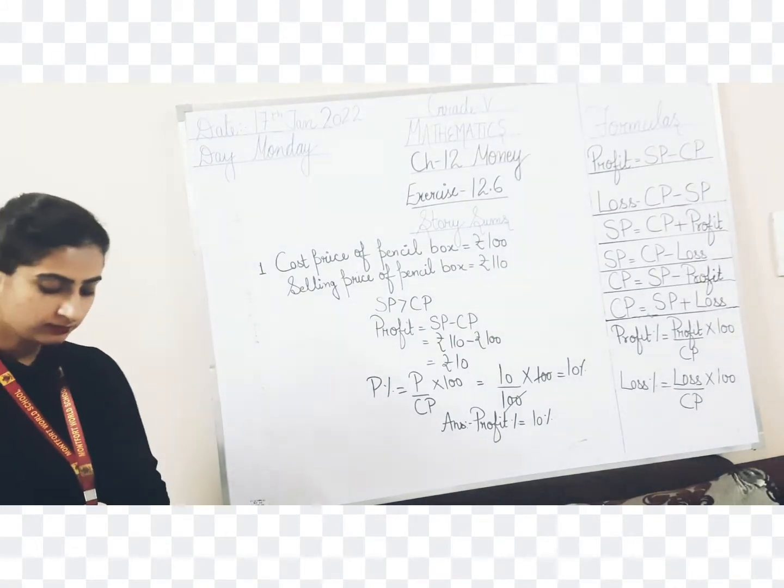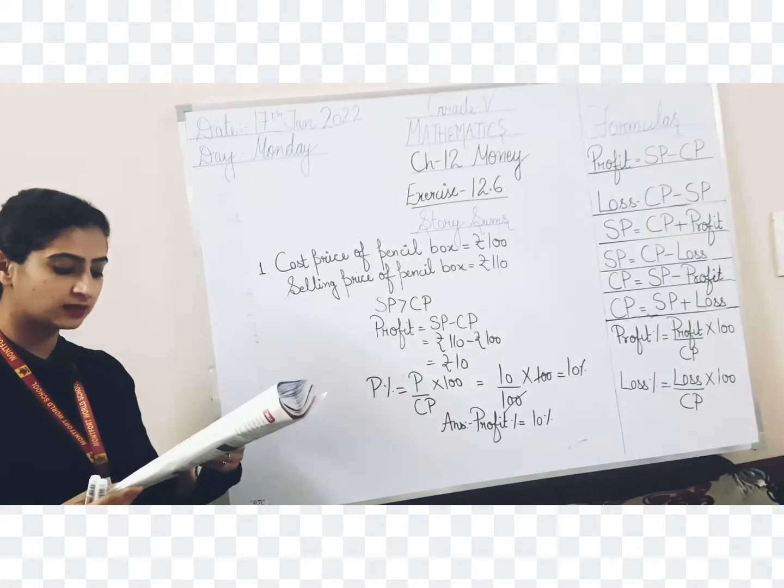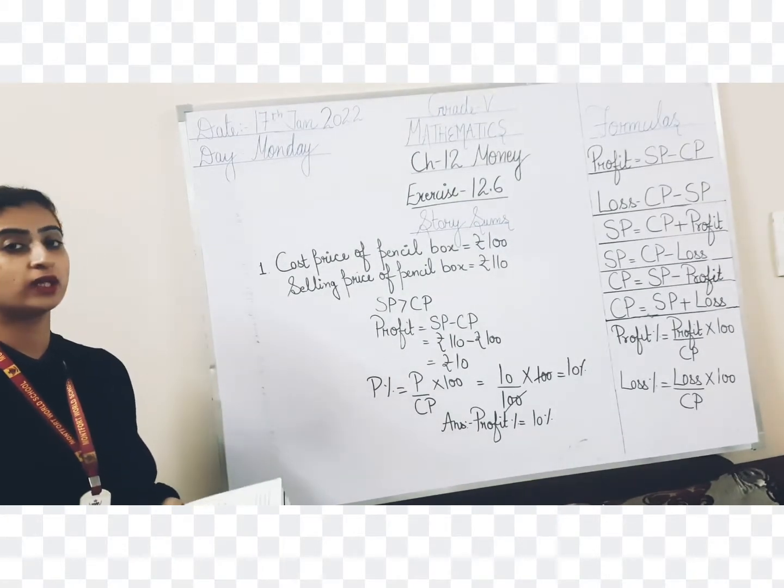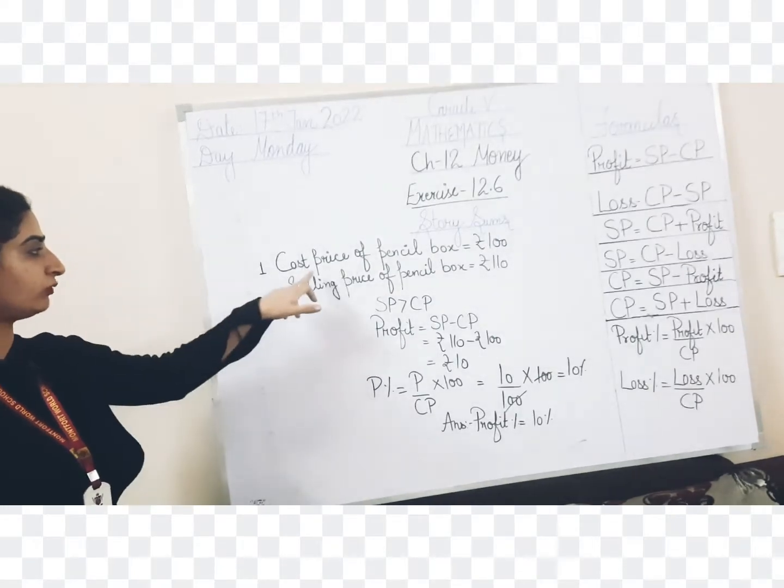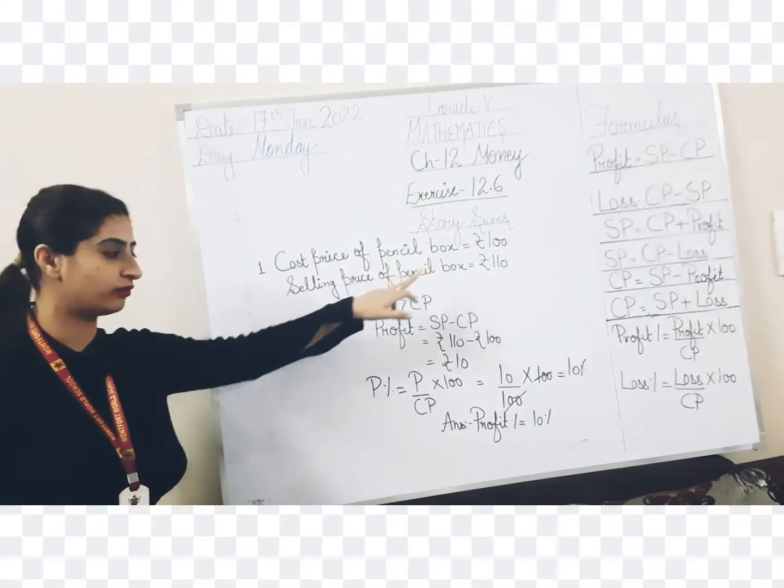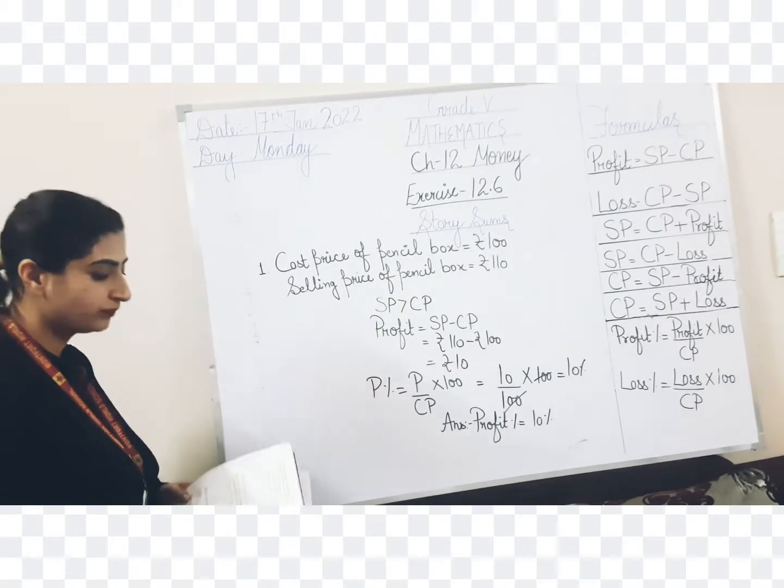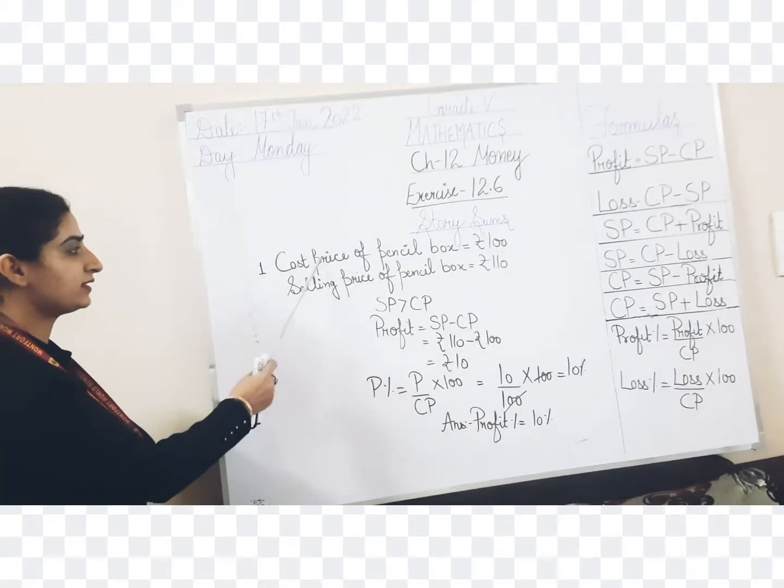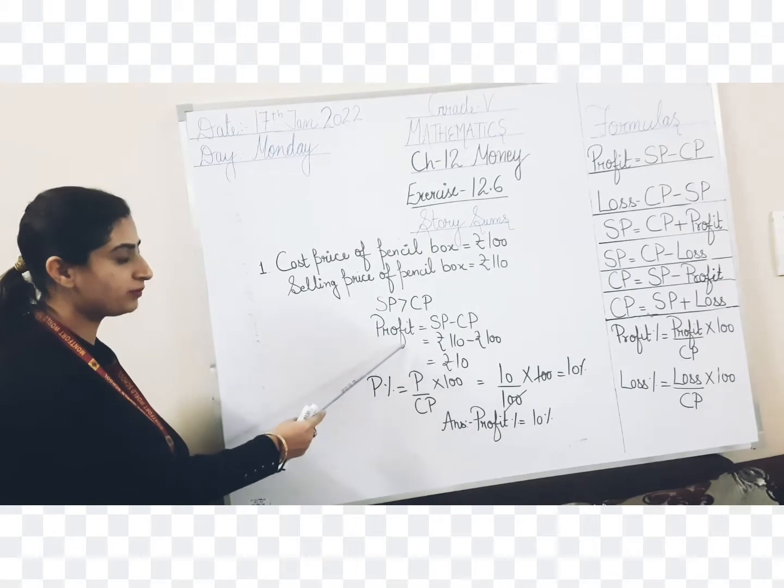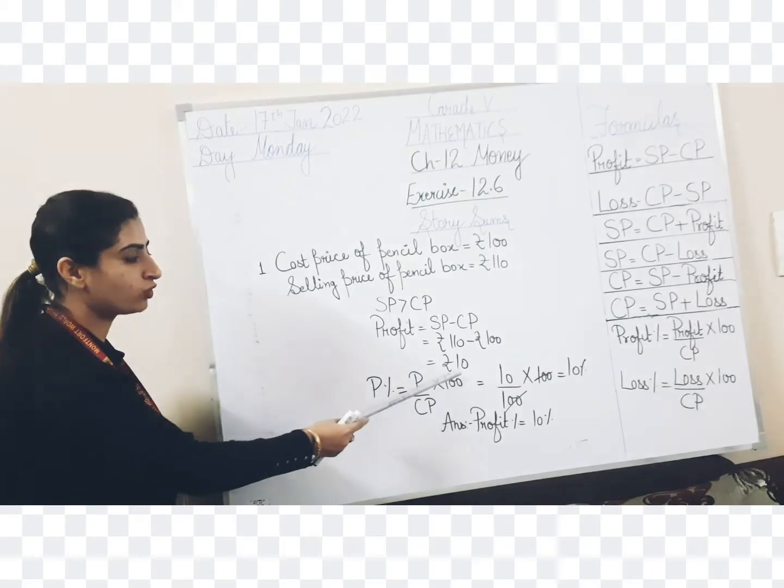First question is: a shopkeeper buys pencil boxes at rupees 100 each and sells them at rupees 110 each. Find his gain percent. What is gain? Gain is profit percent. So what is given in the question? Bought means cost price of pencil boxes rupees 100 and selling price of pencil boxes rupees 110. Now we have to compare SP and CP to calculate profit or loss. SP is higher than CP. So that means a profit.